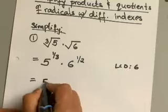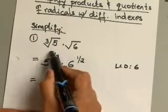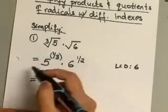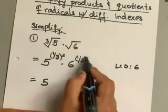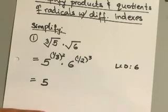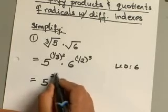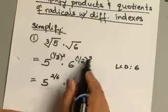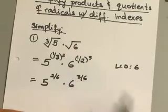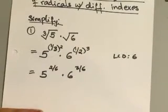So basically you need to multiply your first exponent by 2 and you need to multiply your second exponent by 3, which will give you 2/6 on 5 and for 6 it will give you 3/6.